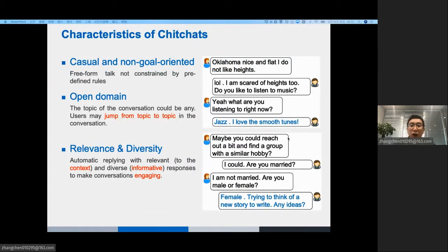And there are three characteristics in chit-chats. Firstly, the chit-chats are commonly casual and non-goal-oriented. That is, the dialogue is free form talk. Secondly, the chit-chats are open domain. The topic could be any. The last one is relevance and diversity. The bot should reply with relevant and diverse responses to make dialogues engaging and informative.